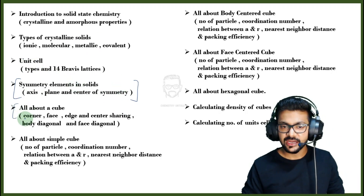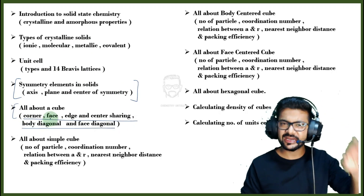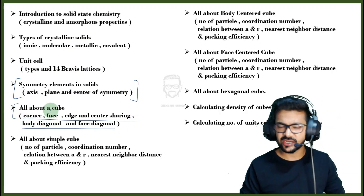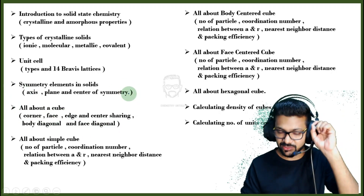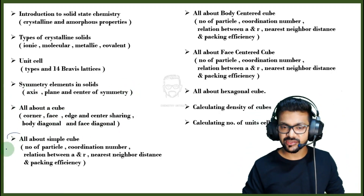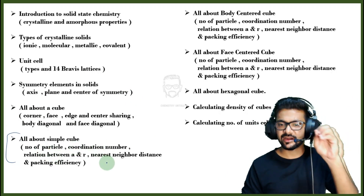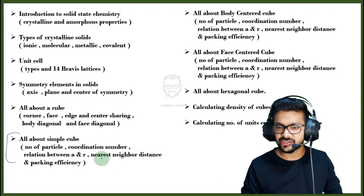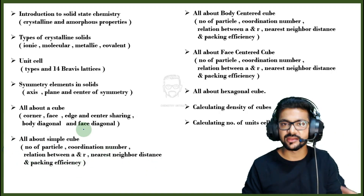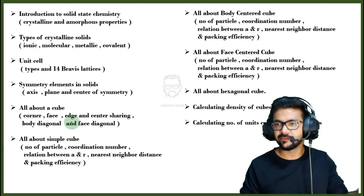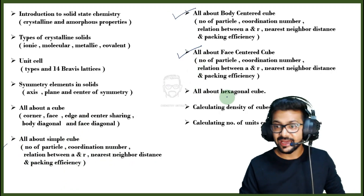Then all about cubes — starting from corner, face, edge, center sharing, body diagonal, and face diagonal. I have not just given formulas; I have given derivations. All about simple cube, BCC, and FCC — number of particles, coordination number, relation between A and R, nearest neighboring distances, and packing efficiency are all covered.